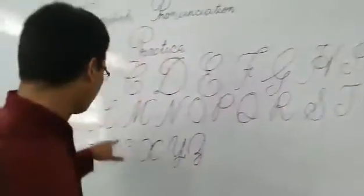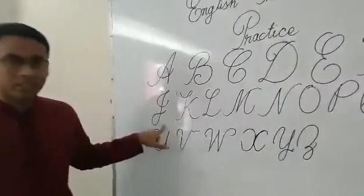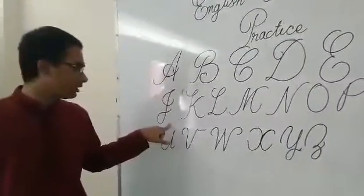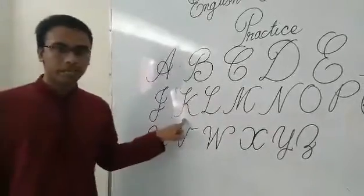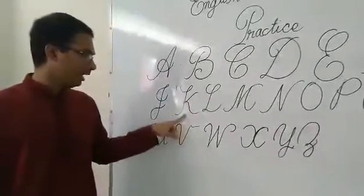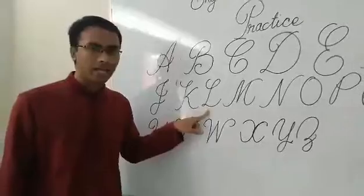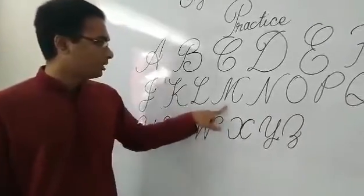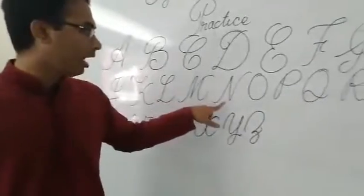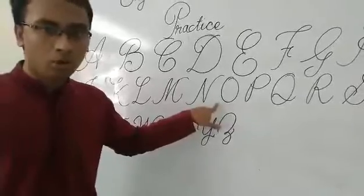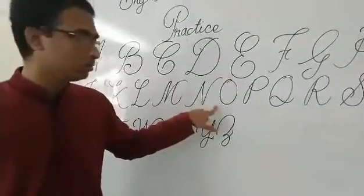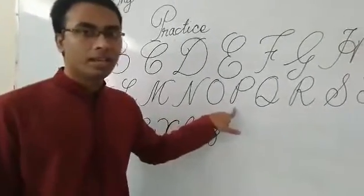All right. We can start from the second row. That is J. It's J. And it's K. It's K. And this one is L. L. And this one is M. N. O. O. P. P.